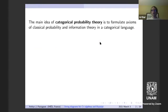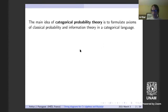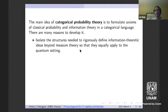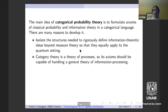Before I even talk about the non-commutative setting, I want to illustrate the importance of categorical probability theory on its own. The idea in this subject is that we're trying to formulate many of the axioms, ideas, theorems, and definitions from probability theory, information theory, and information processing, and describe them in a categorical language.